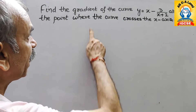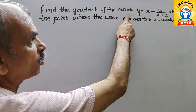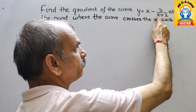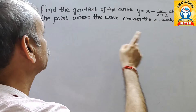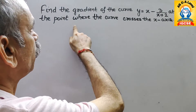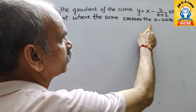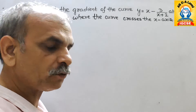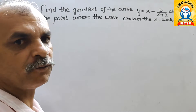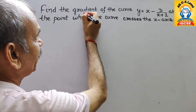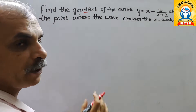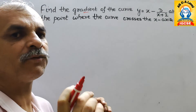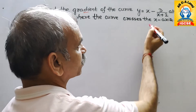The question is: find the gradient of the curve y = (x-3)/(x+2) at the point where the curve crosses the x-axis. Gradient is nothing but dy/dx — that means differentiation of this expression.